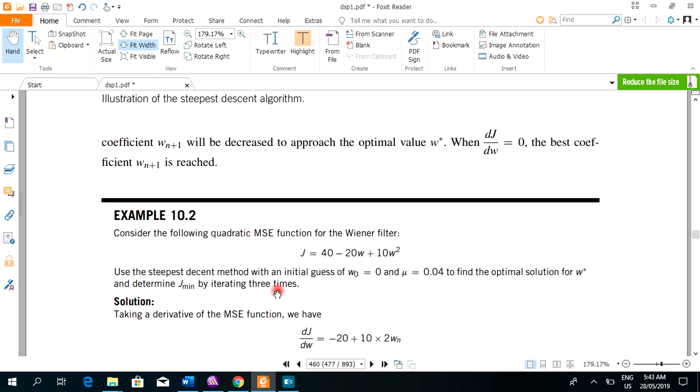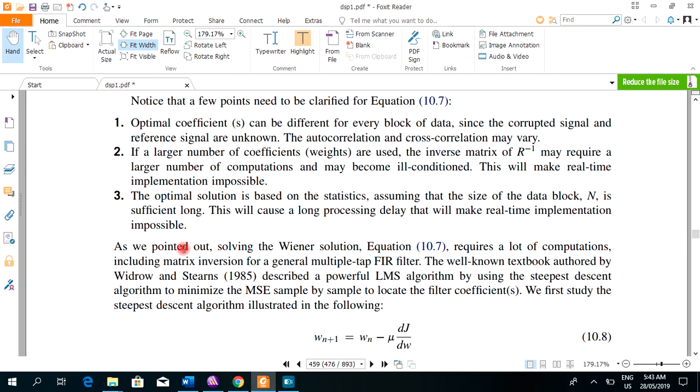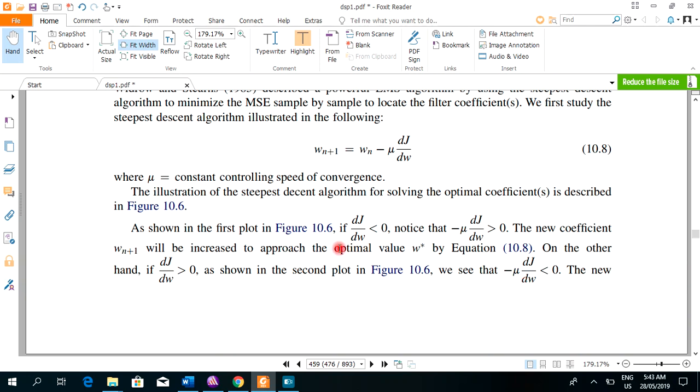A little bit illustration is given here. As shown in the figure, if the derivative is less than zero, notice that the constant controlling speed of convergence multiplied by the derivative will be greater than zero, the new coefficient will be increased to approach the minimal value.